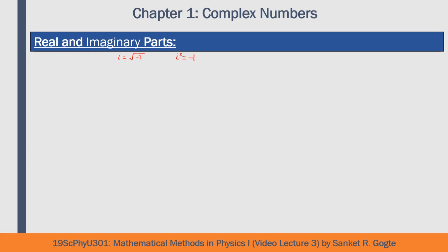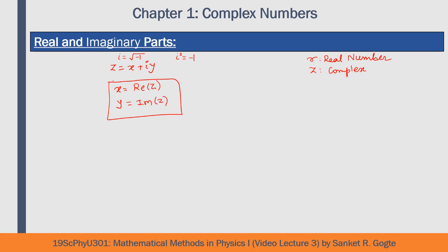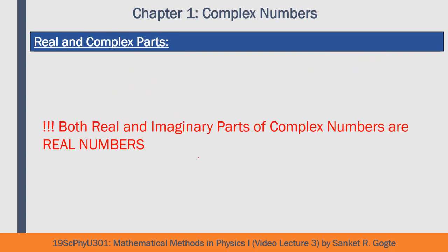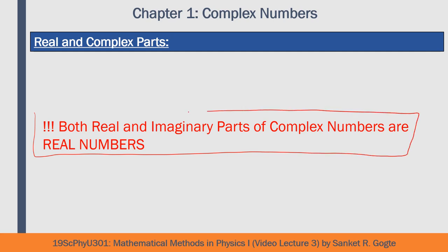A complex number can be written as z equals x plus i*y. The notation z is commonly used to denote a complex number, just as r is used for real numbers. In this complex number z, x is called the real part and y is called the imaginary part. Keep in mind that both x and y are themselves real numbers. It is emphasized that both real and imaginary parts of a complex number are real.